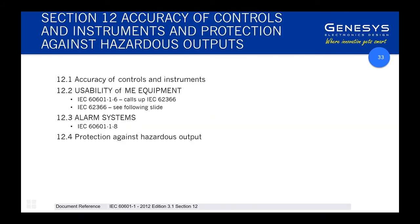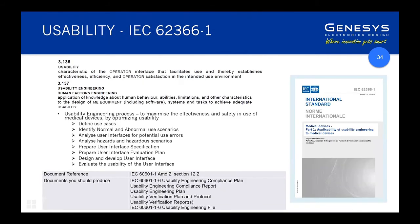Section 12 on accuracy of controls and instruments gets pretty specific. If you're displaying values, how accurate is the value being displayed? Does your measurement device measure it accurately enough? Does your software meet requirements to avoid corrupting values or applying an incorrect equation? You need sufficient safeguards in place to ensure any information displayed is sufficiently accurate, and your controls have accurate markings.